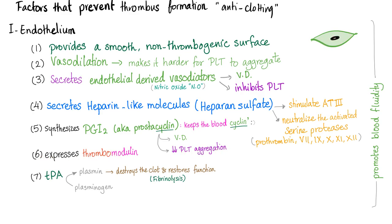The endothelium synthesizes thrombomodulin, which modulates thrombin from being pro-coagulation to being anti-coagulation — which is amazing. It also produces TPA, which converts plasminogen into plasmin to destroy the clot and restore function, a process called fibrinolysis.